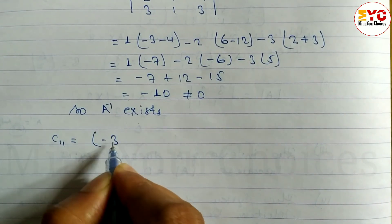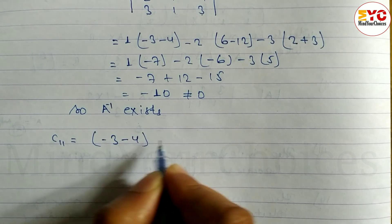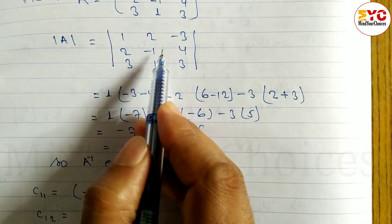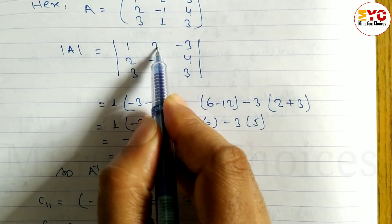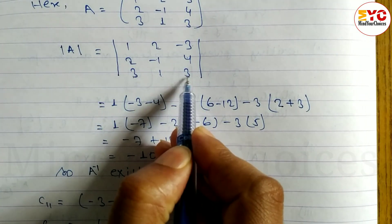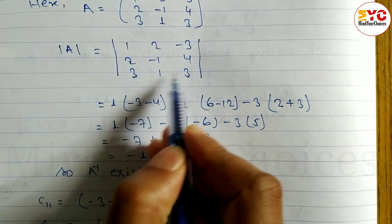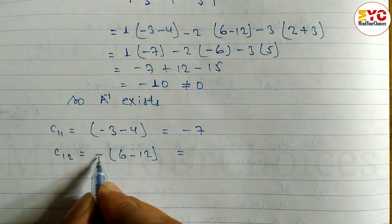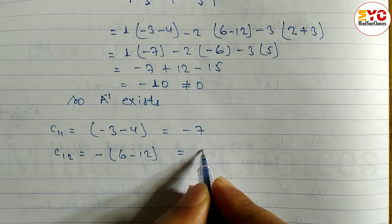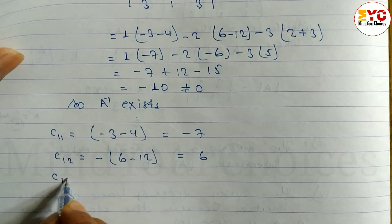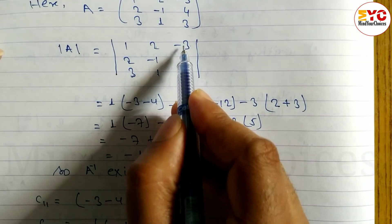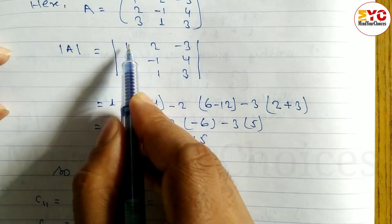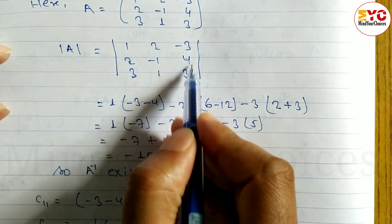Cofactor C11: minor of element (1,1) gives minus 3 minus 4 = minus 7. Cofactor C12: minor of element (1,2) gives minus 6, so C12 = minus 6. Cofactor C13: minor gives 2 plus 3 = 5, so C13 = 5.